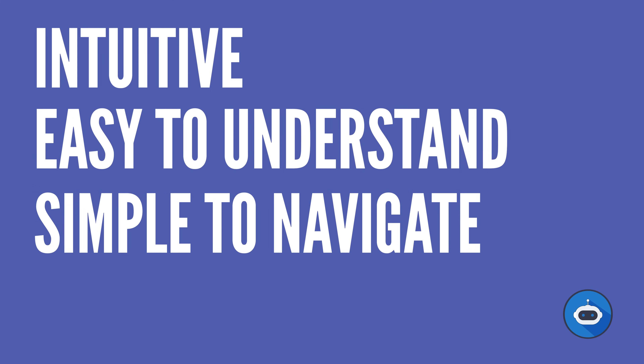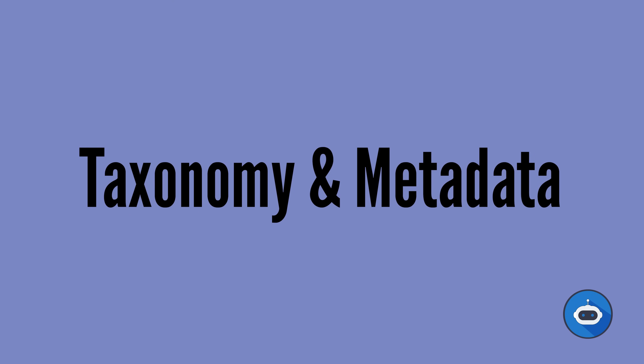Good IA aims to organize information in a way that is intuitive, easy to understand, and simple to navigate. To achieve this, IA practitioners use various techniques such as creating taxonomy, metadata, and designing effective navigation elements.